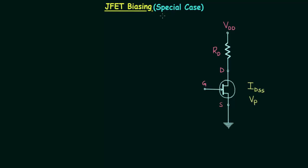In this lecture, we will discuss a special case of JFET biasing. Till now, we have discussed four biasing schemes. The first one was fixed bias configuration.